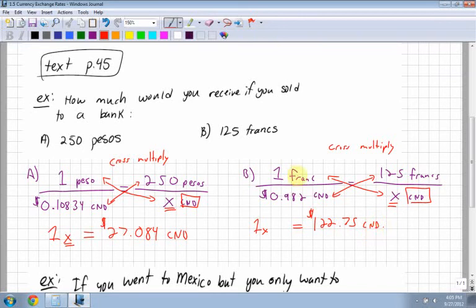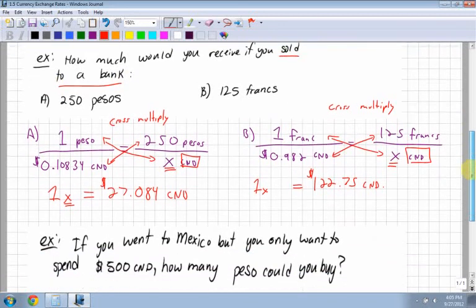So it's a really simple way. Just leave your francs on top or whatever the value that you're looking for on top, and try to figure out how much is that one franc or one peso worth in Canadian dollars when you're trying to sell it to a bank.